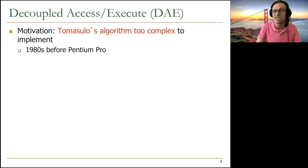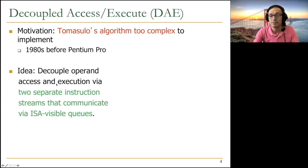We're going to see that it's going to change the hardware. The idea is to decouple operand access or memory access versus execution computation via two separate instruction streams that communicate through ISA visible queues. That's the basic idea.